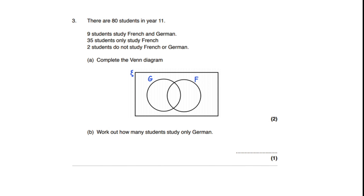There are 80 students in year 11. 9 students study French and German, 35 students study only French, and 2 students do not study French or German. Complete the Venn diagram. So: 9 goes in the overlap, 35 goes in only French, and 2 goes outside. To work out the number who study only German, take 80 and subtract the students who study both (9), only French (35), and neither (2), giving 34 people who study only German. So the answer to part B is 34, which you can place inside the Venn diagram.